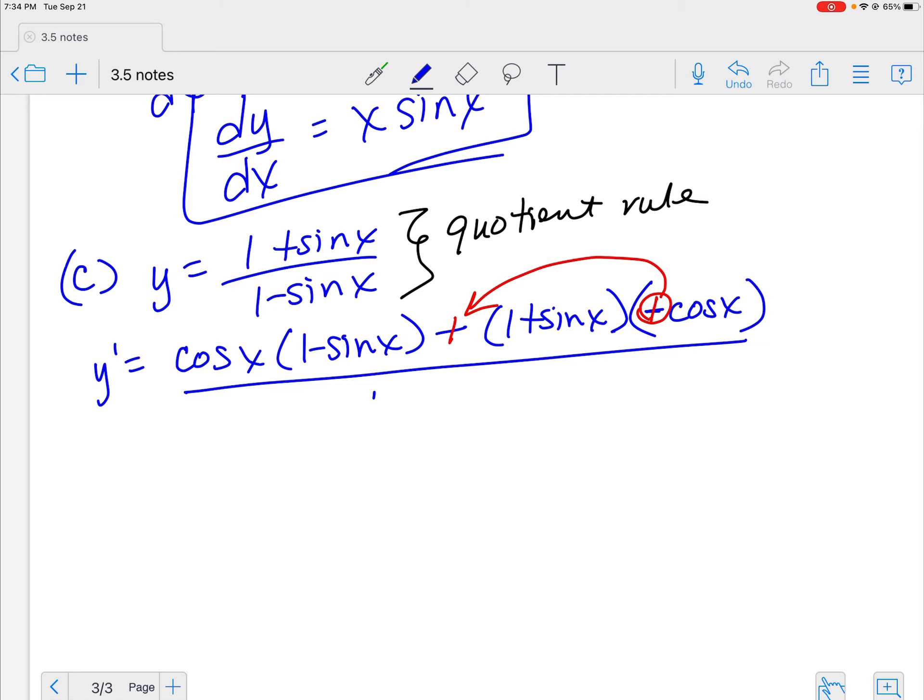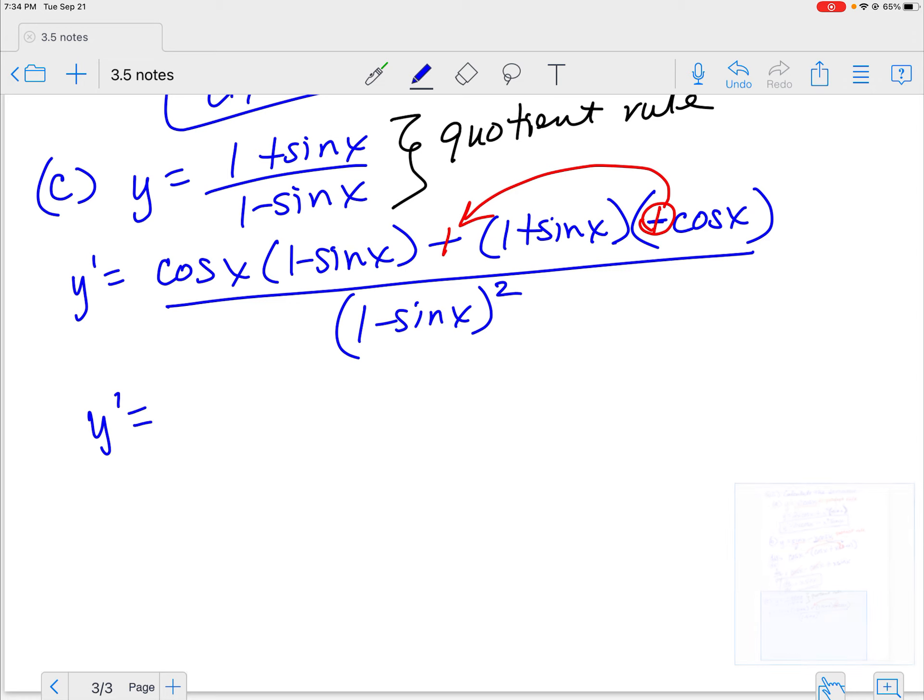This negative that I have right here can just make that one positive. And then we've got it all over the denominator squared. Don't forget that part. You get so worked up about the top, you can't forget that bottom. So y prime is now equal to, when I distribute this, I've got the cosine of x minus cosine x sine x plus. If I distribute that cosine x plus cosine x sine of x, when I distribute it all over the denominator.